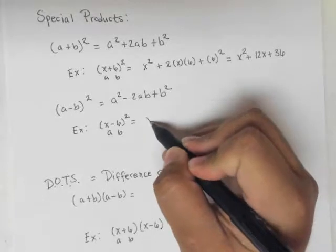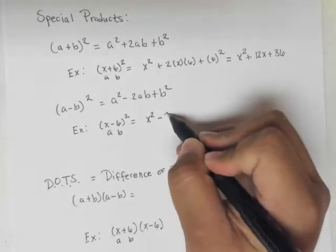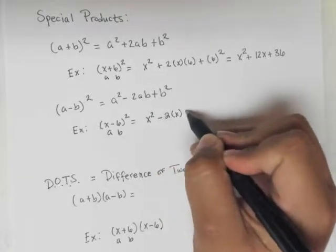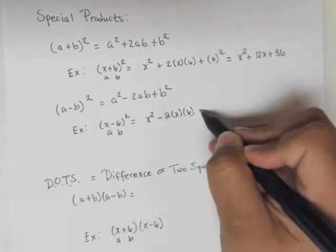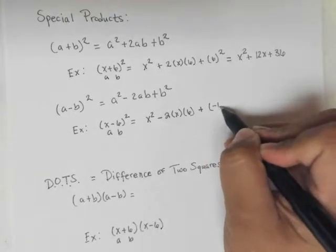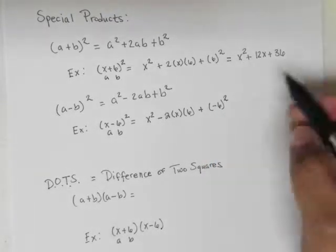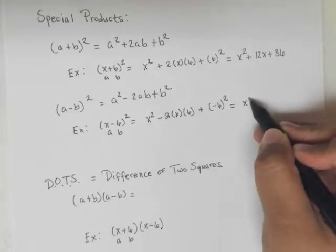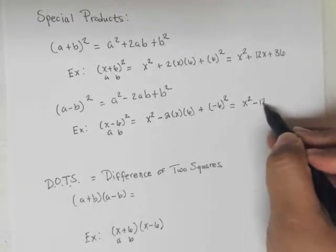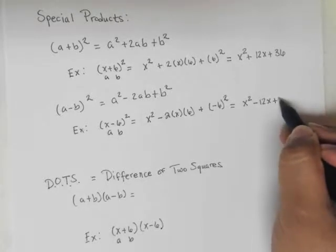Here's what it is: you're going to have x² minus 2 times x times 6, plus (-6)². This simplifies again to x² minus 12x, but it's still plus 36.